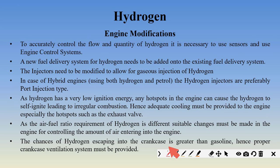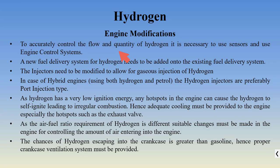To combust hydrogen inside the engine, several modifications are needed. Hydrogen has very high energy density, so even a small amount produces a large amount of power. To accurately control the power developed, it is very necessary to control the amount of hydrogen entering the engine. Sensors and engine control systems are required — this cannot be done manually. A completely separate fuel delivery system must be developed for hydrogen because it is a gas and the traditional fuel supply system cannot be used. The injectors must also be modified for gaseous injection.